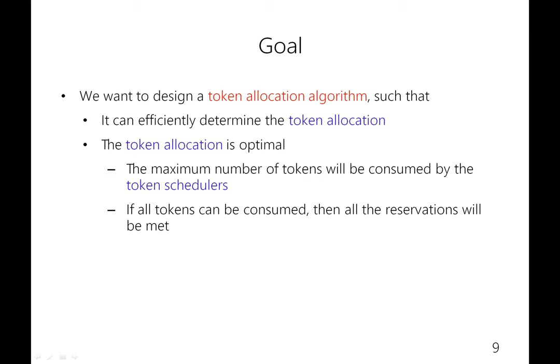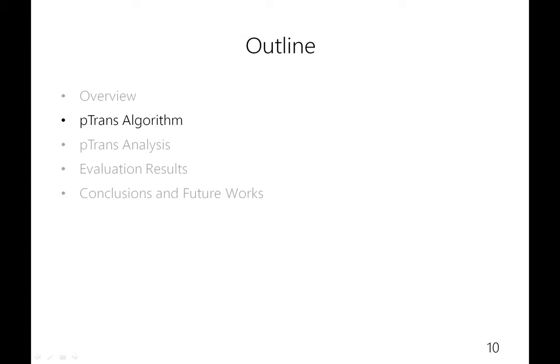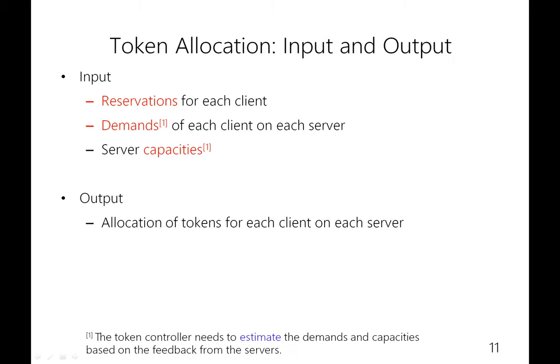Therefore, the goal is to determine a token allocation algorithm which can efficiently determine the token allocation. We also wish to find an optimal allocation in which the maximum number of tokens will be consumed by the token schedulers, so that if all tokens can be consumed at runtime, all the reservations will be met. Let me describe the token allocation problem precisely. The inputs are the reservations for each client, the demands of each client on each server, and the server capacities. The output will be the token allocation for each client on each server, representing the priority IOs.